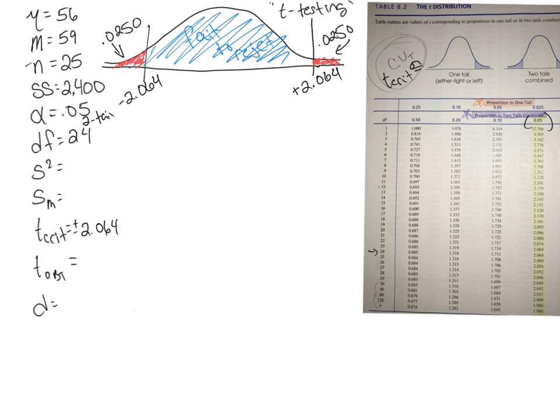And remember, keep in mind, sample variance looks like this. So it's sum of squares divided by n minus 1, because we're dealing with a sample. So we have sum of squares of 2,400 divided by 24, because we had 25 people in our study. So we have variance equaling 100.